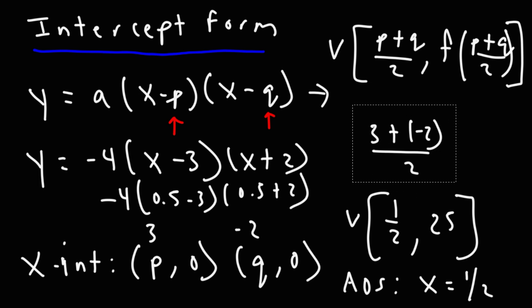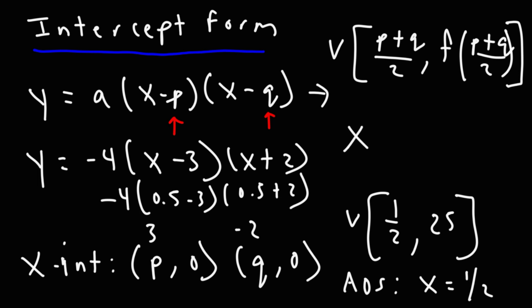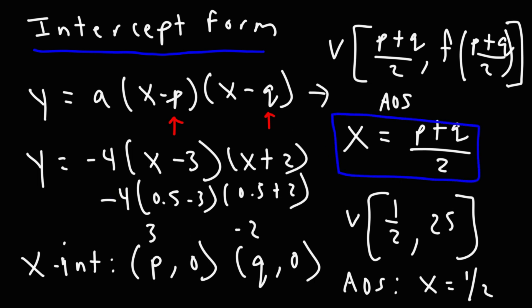In intercept form, the axis of symmetry is x = (p + q) / 2, or equivalently one half times (p + q). Those are the formulas associated with the different forms of a quadratic equation.